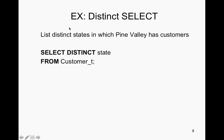Here's another example: list distinct states in which Pine Valley has customers. You put SELECT DISTINCT — and again, DISTINCT is to remove all duplicates — state FROM customer table. The semicolon at the end tells the query to run and then stop.